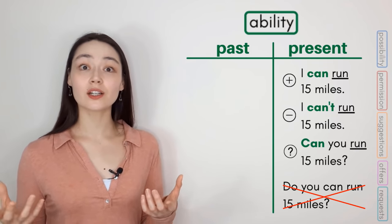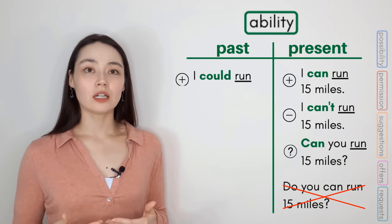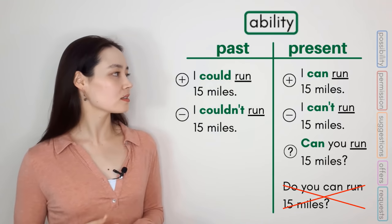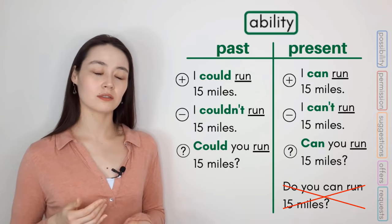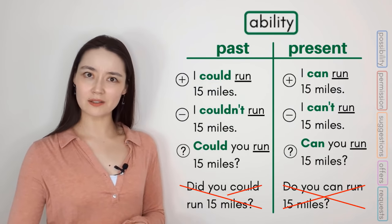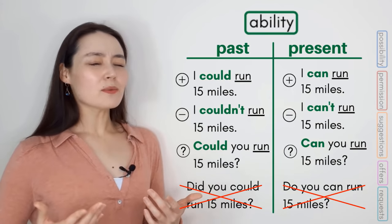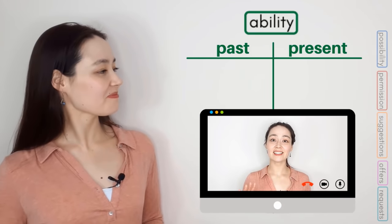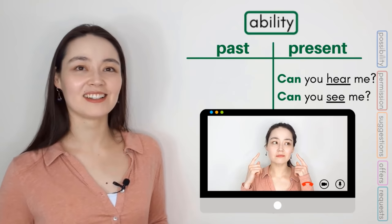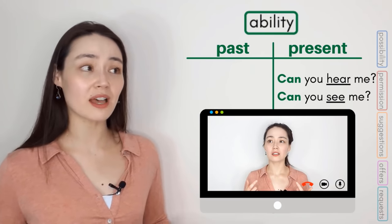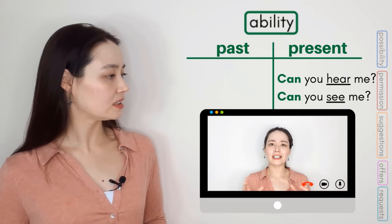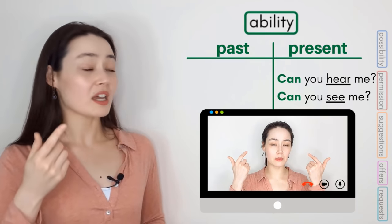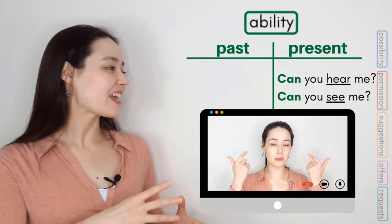The past of 'can' is 'could.' For example: 'When I was a teenager, I could run 15 miles,' 'I couldn't run 15 miles,' 'Could you run 15 miles?' — not 'Did you could run 15 miles?' And I'm sure we've all had this experience on Skype or Zoom: 'Can you hear me? Can you see me? Yeah, I can hear you, I can see you — everything is clear.' 'Now I can't hear you. And now she's frozen.'